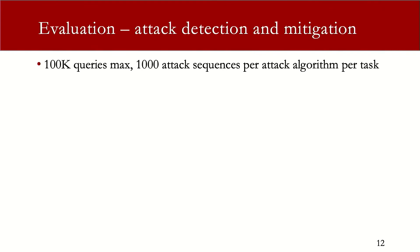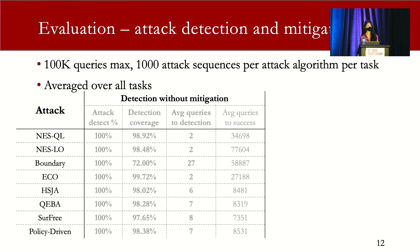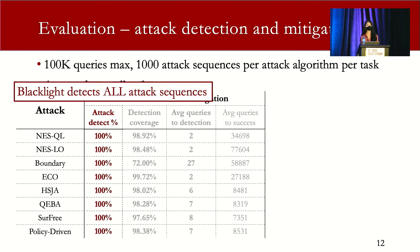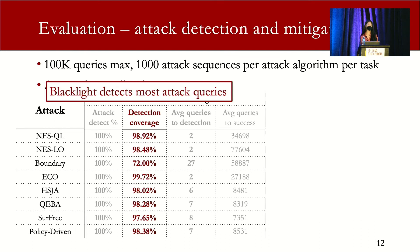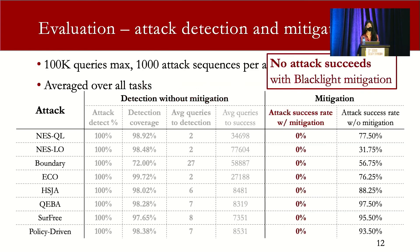We run 1,000 attack sequences per attack algorithm per task, and we allow the maximum query number for each attack sequence to be 100K. The results averaged over all tasks show that BlackLight can detect all attack sequences for all attack algorithms over all tasks, and the detection coverage is very high, meaning BlackLight can detect most attack queries. Moreover, BlackLight can detect most attack sequences in two to eight queries — especially impressive given that most attacks succeed in tens of thousands of queries. Most importantly, no attack sequence succeeds with BlackLight mitigation.